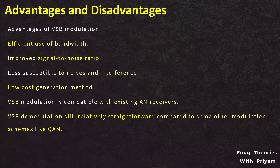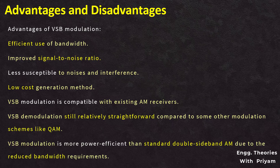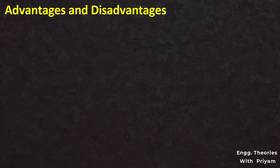VSB modulation is compatible with existing AM receivers. While VSB demodulation is more complex than standard AM demodulation, it is relatively straightforward compared to other schemes like QAM. VSB modulation might require higher power compared to SSB or QAM, but it can be more efficient than standard double-sideband AM due to reduced bandwidth requirements, which can be advantageous in certain broadcasting scenarios.